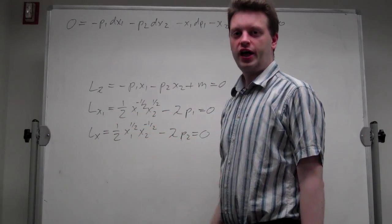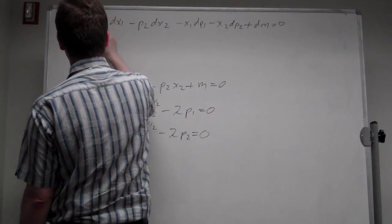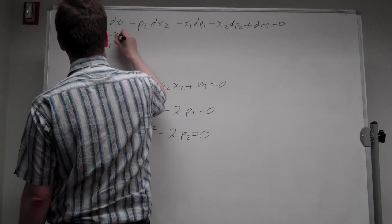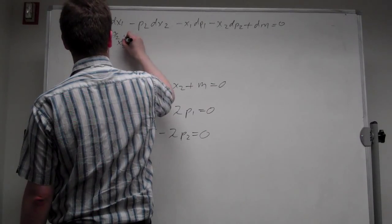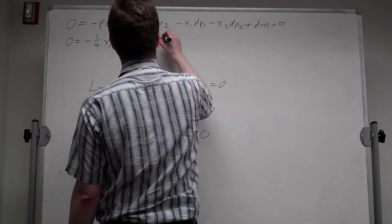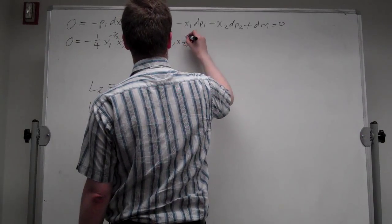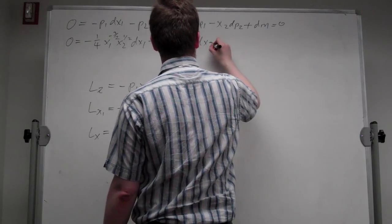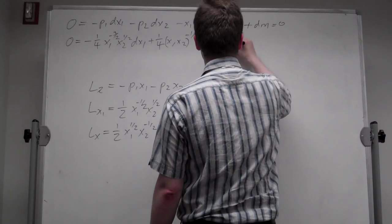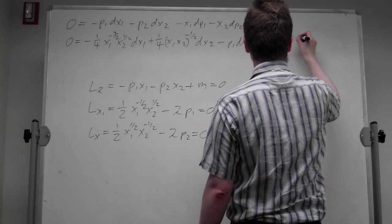The second equation, totally differentiating with respect to x1: 0 equals minus (1/4)*x1^(-3/2)*x2^(1/2)*dx1 plus (1/4)*x1^(1/2)*x2^(-1/2)*dx2 minus p1*d_lambda minus lambda*dp1 equals 0.